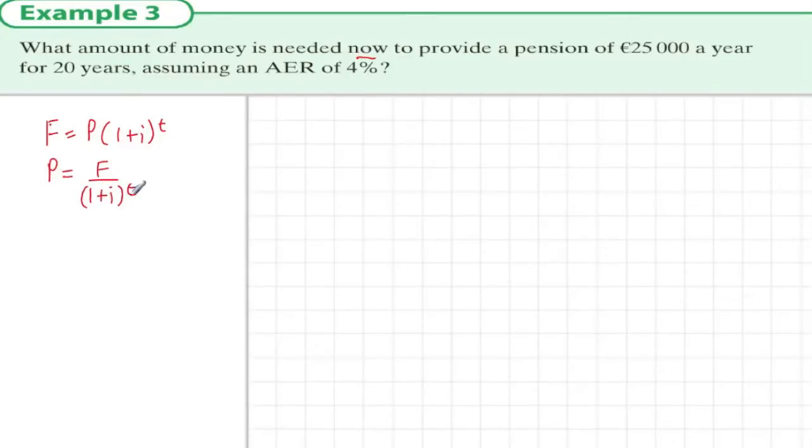Let's write down the information we have. We know the interest rate is 4%, therefore 1+i is 1.04. We also know that the time in question is 20 years and it's per annum we're dealing with. We also know that the future value that we want it to amount to is €25,000.